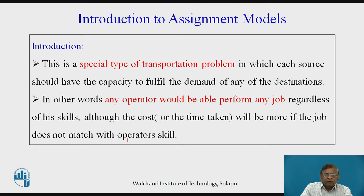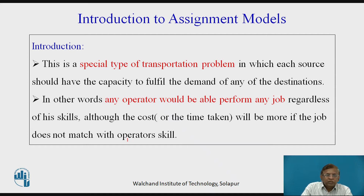We have different operators and different jobs for pairing or assigning. Each operator is supposed to be capable of working on different jobs or different machines, and they may have intrinsic differences in their skills. Based on that, there will be differences in the hourly or total cost for different combinations or pairings of operators and jobs or machines.